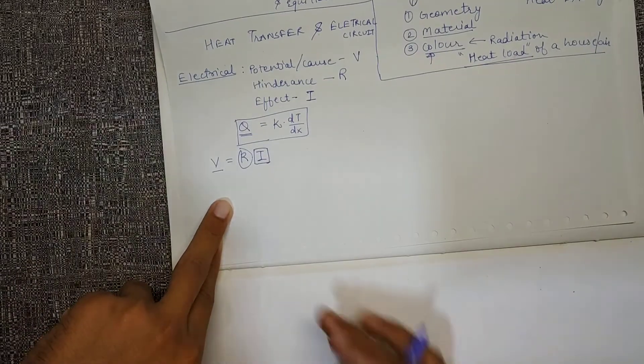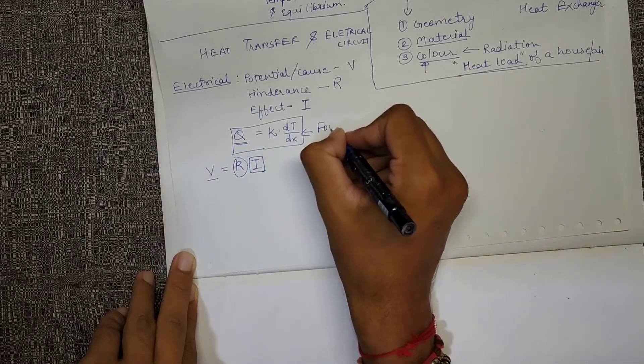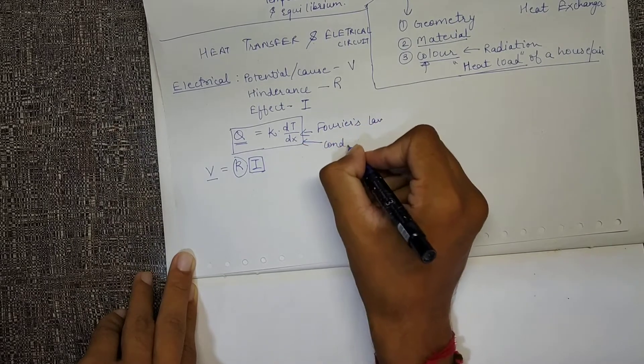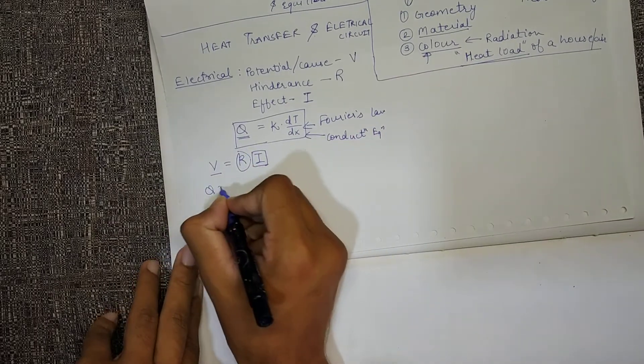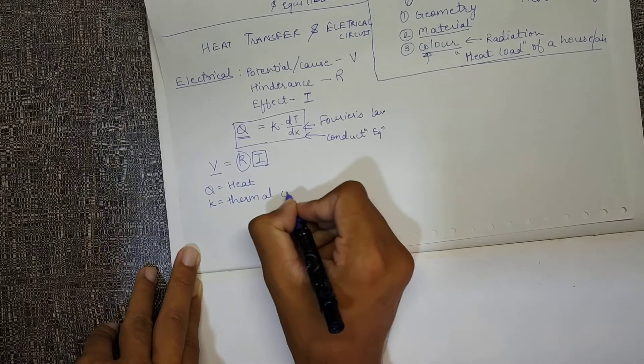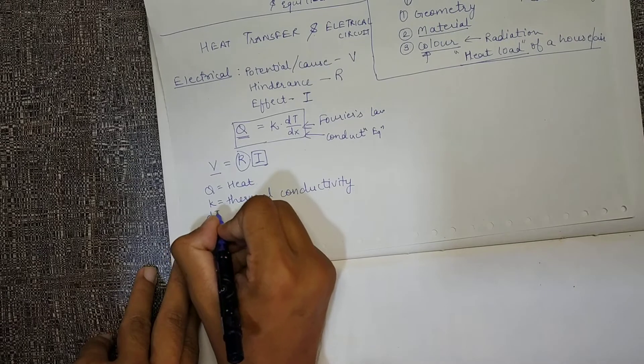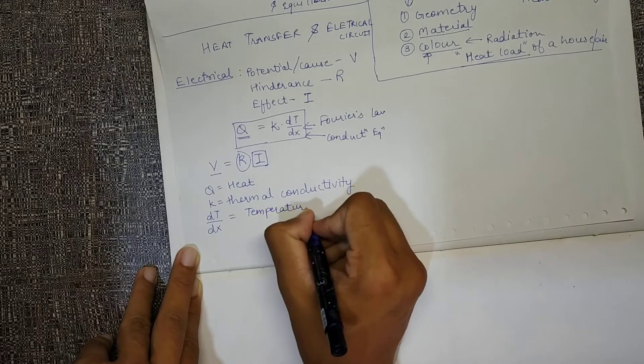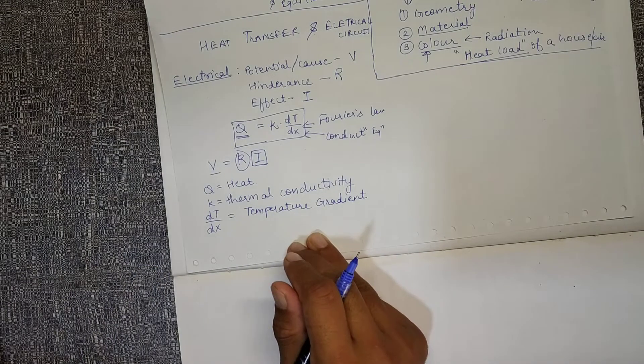In heat transfer problems, this is Fourier's law for your information, or simply a conduction equation. The conduction equation is given by Fourier's law. Here Q is heat, K is thermal conductivity, and dt by dx is temperature gradient. I had explained this earlier also in the very first video.